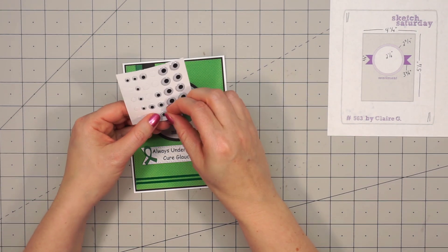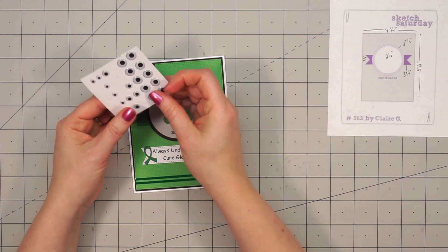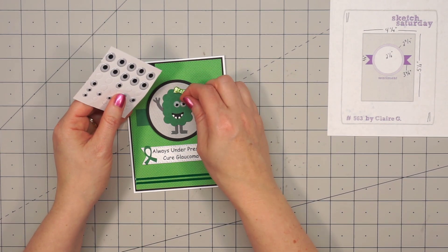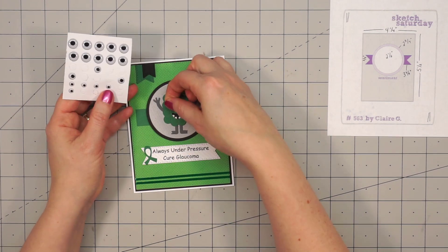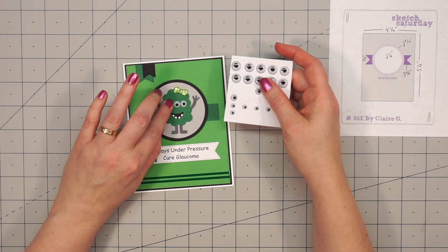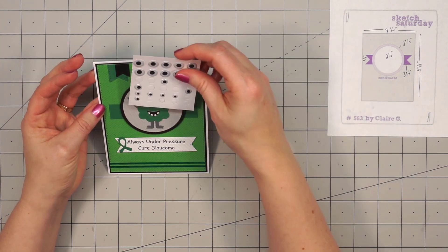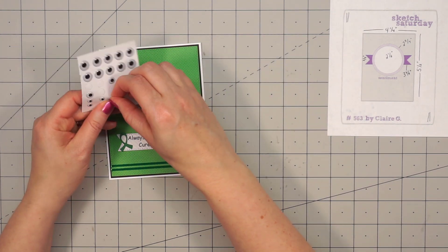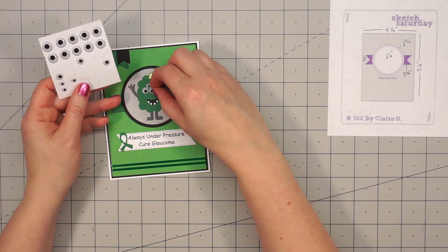So now the little monster needs some eyes. I'm using some of the epoxy eyeballs from Queen & Company. You can buy just refills of these. One sheet has the epoxy stickers, and then the other has the wiggly eyes. I decided to go with the epoxy stickers.